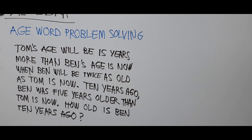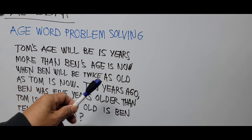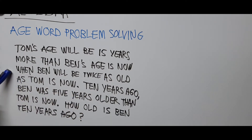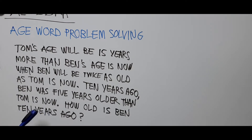Tom's age will be 15 years more than Ben's age is now, when Ben will be twice as old as Tom is now. 10 years ago, Ben was five years older than Tom is now. How old is Ben 10 years ago? This problem was previewed in the earlier video on age word problem solving.